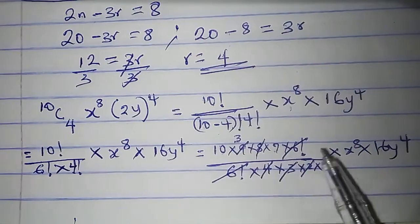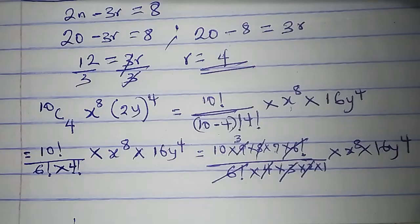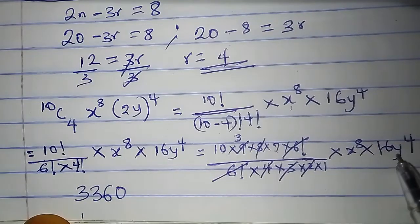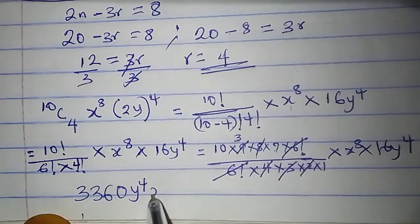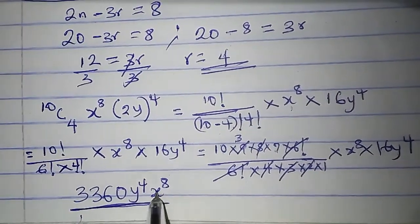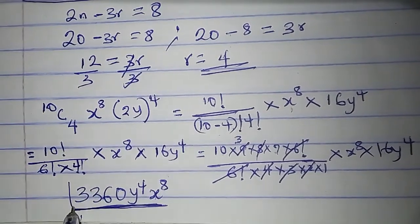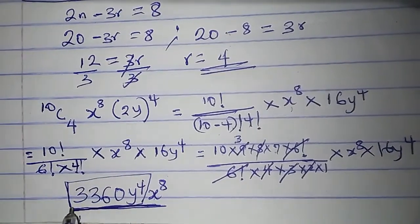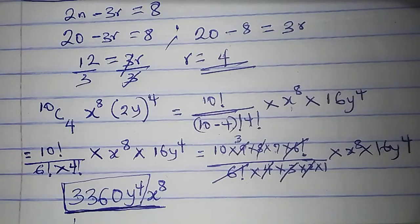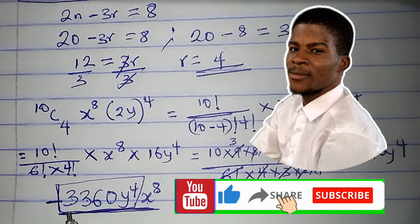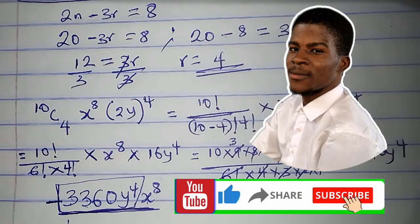10 times 3 times 7 times 16 is 3,360. Times y raised to the power of 4 times x raised to the power of 8. This is the term that has x raised to the power of 8. So the coefficient of x raised to the power of 8 is everything here apart from x raised to the power of 8, which is 3,360 y to the power of 4. So the coefficient of x to the power of 8 in the binomial expansion of that expression is 3,360 y to the power of 4. I hope you enjoyed the video. I'll see you in the next one.